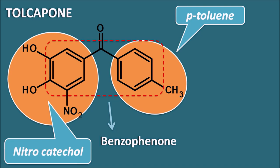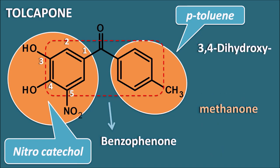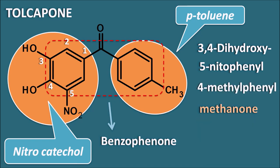To give the naming to this ring — because both phenyl rings are not similar, we can call it methanone. This methanone is attached to the two phenyl rings. Numbering one of the phenyl rings: 1, 2, 3, 4, and 5. It has a third and fourth position dihydroxy group — so 3,4-dihydroxy — and at the fifth position a nitro group — so 5-nitro. This gives us the 3,4-dihydroxy-5-nitrophenyl ring attached on one side of the methanone. On the other side, it has the para-methyl phenyl, or 4-methylphenyl. That is the complete name of tolcapone.